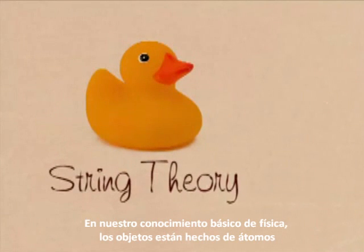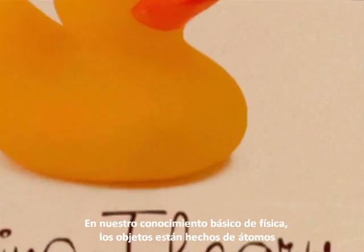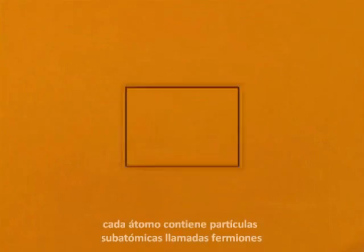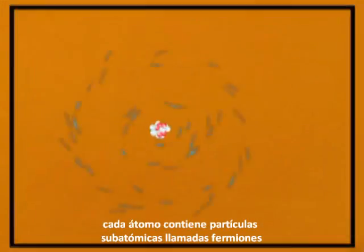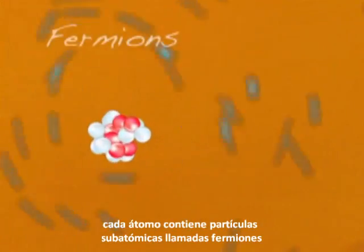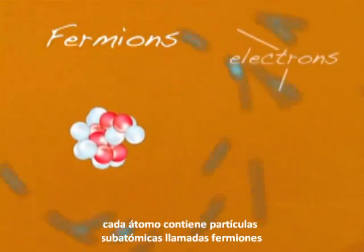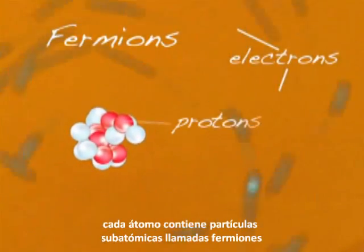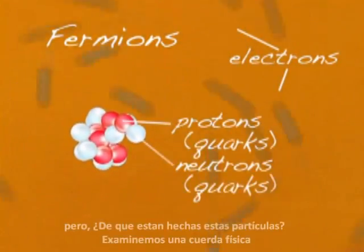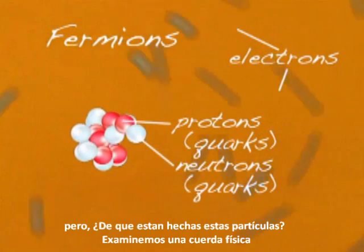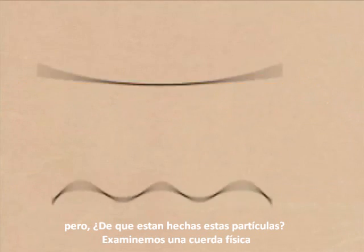In our basic understanding of physics, objects are made of atoms. Each atom contains subatomic particles called fermions. But what makes up these particles?